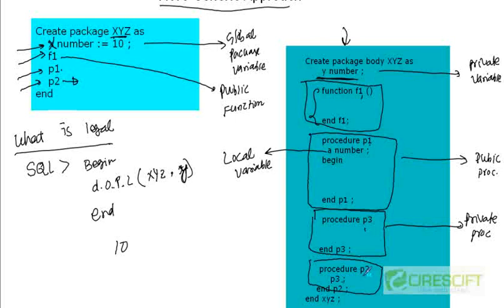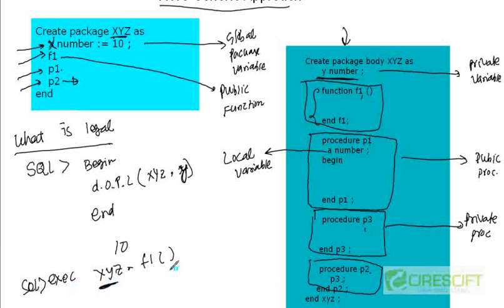At the SQL prompt you can execute xyz.f1 because f1 is a public function declared in the package specification. You call it using the package name dot function name. However, you cannot execute xyz.p3 because p3 is a private procedure and is only accessible inside the package body — you cannot call it from outside.